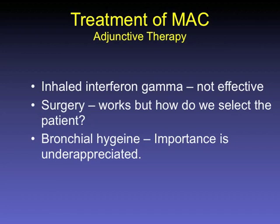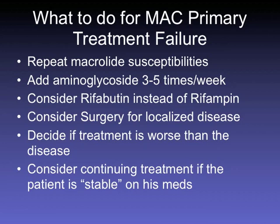Adjunctive therapies include inhaled interferon gamma — not proven very effective — and surgery: how to select the patient, finding a surgeon comfortable with NTM, and the importance of bronchial hygiene and expectoration. If a patient fails treatment, recheck macrolide susceptibilities, add an aminoglycoside three to five times a week, consider switching to rifabutin, consider surgery for localized disease. Sometimes the treatment is worse than the disease and you stop and observe. Some patients do better staying on long-term treatment if they're tolerating it and become ill whenever it's stopped.